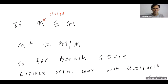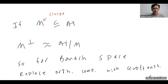The Fredholm alternative holds on a Banach space: T compact, lambda not zero implies either lambda is an eigenvalue of T or T minus lambda times the identity is invertible. I think this is a good place to leave off. If you want to learn more, begin chapter five on Banach and C*-algebras.